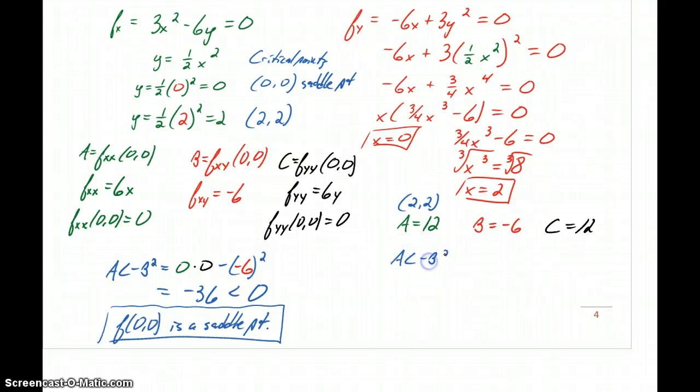So then when we look at evaluating ac minus b squared, we'll get 12 times 12 minus the quantity negative 6 squared or minus negative 6 squared, which will give us 108, which is greater than 0. So since that value ended up being positive, we know we either have a maximum or minimum. So we look at our value for a, which is 12. That's greater than 0, which implies that f of 2 comma 2 is a local minimum.